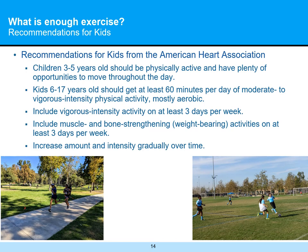What constitutes the recommendation for kids? Per the American Heart Association, children three to five years old should be physically active throughout the day and not chained to a device. Kids that are school age, six to 17 years old, should get at least 60 minutes per day of moderate to vigorous intensity physical activity, mostly aerobic — things like running and soccer, ideally outside to also get the sunlight discussed in part one. Vigorous intensity activity at least three days a week, plus muscle and bone strength and weight-bearing activities on at least three days per week. Increase amount and intensity gradually over time.